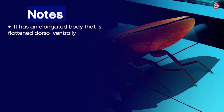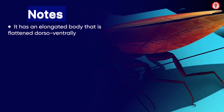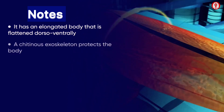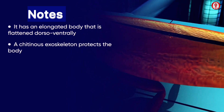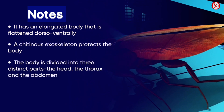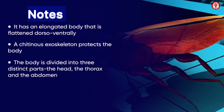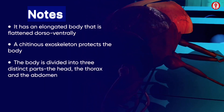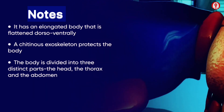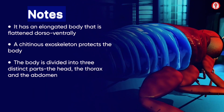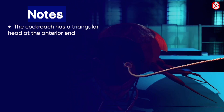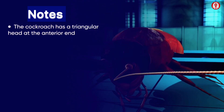It has an elongated body that is flattened dorso-ventrally. A chitinous exoskeleton protects the body. The body is divided into three distinct parts: the head, the thorax, and the abdomen. The cockroach has a triangular head at the anterior end.